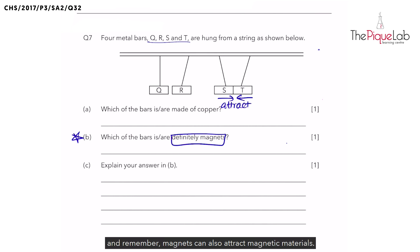And remember, magnets can also attract magnetic materials. Therefore, there is a chance where T could actually be a magnetic material. Hence, we cannot say that T is definitely a magnet.